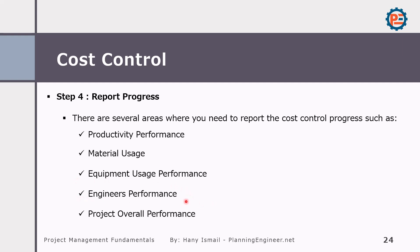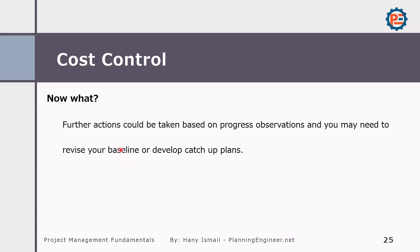We can also evaluate engineer performance by linking the scope of work for every engineer and measuring their productivity, material, and equipment usage — a very good evaluation criterion. Then we can make a project overall performance report. Further actions can be taken based on progress observations; you may need to revise your baseline, develop a catch-up plan, or investigate if something is going wrong in a certain area, floor, or building of your project.